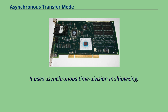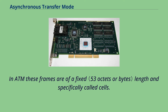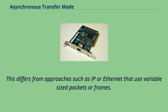ATM uses asynchronous time-division multiplexing. In the OSI Reference Model Data Link Layer, the basic transfer units are generically called frames. In ATM, these frames are of a fixed length and specifically called cells. This differs from approaches such as IP or Ethernet that use variable-sized packets or frames.